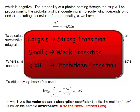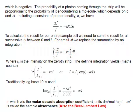If it's zero, but the energy levels are there, then it's a forbidden transition. So having this epsilon allows us to be quantitative about the strengths of electronic transitions.